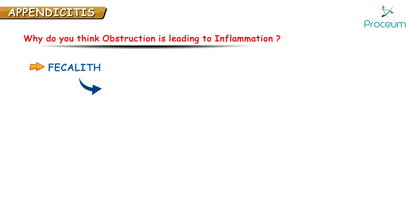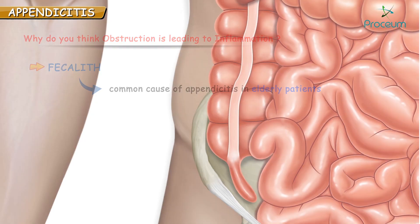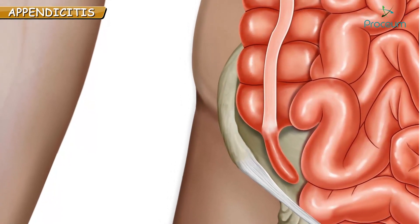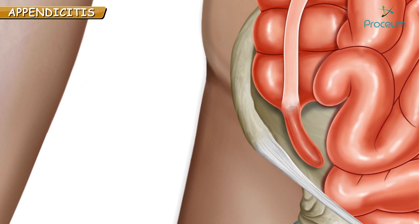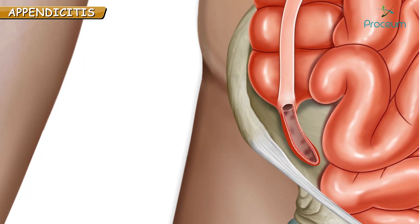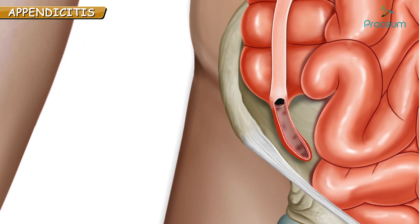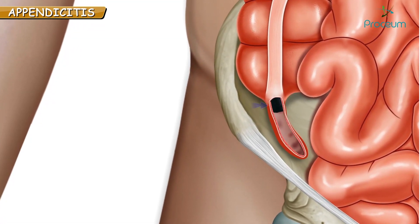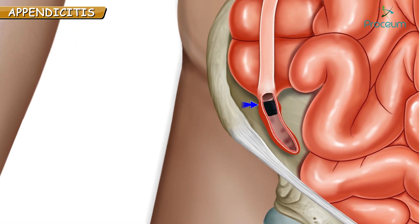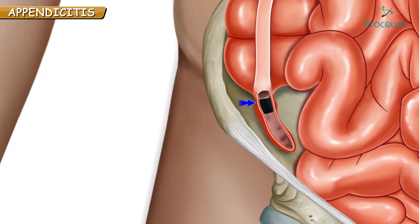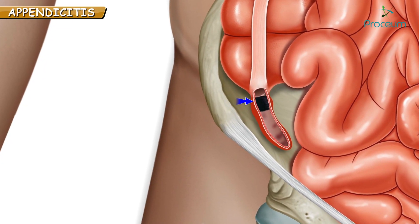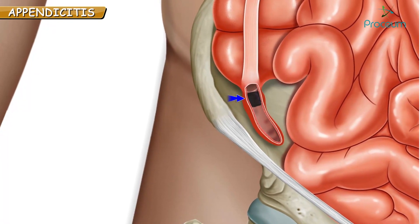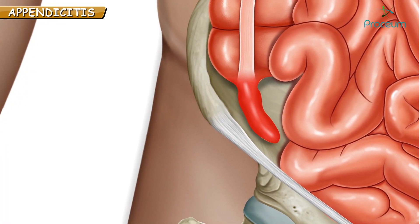Please remember, fecoliths are the common cause of appendicitis in elderly patients. A fecolith is hardened fecal matter. As you know, the appendix is a hollow tube, so a fecolith may find its way into the appendix and obstruct it. Again, obstruction is leading to inflammation.